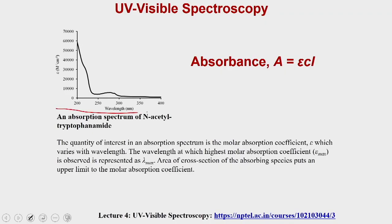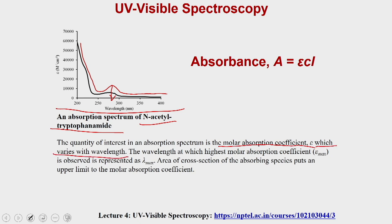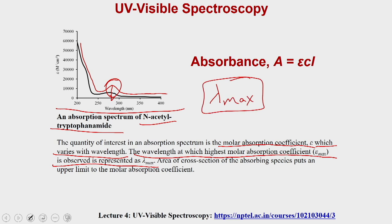This is a typical absorption spectra — the absorption spectra of N-Acetyl L-tryptophanamide. The molecule shows a peak at a particular wavelength. At that wavelength, the absorption gives the molar absorption coefficient epsilon, which varies with wavelength. The wavelength at which the highest molar absorption coefficient is observed is represented as lambda max (λmax), and that is the molar absorption coefficient value people normally use because it gives the most accurate values.